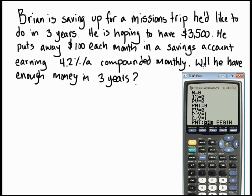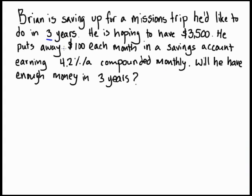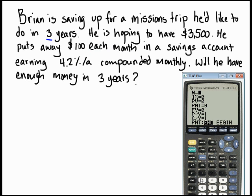Let's take a look at the information here. For questions that involve regular payments, N is not the number of years — N is going to be the number of payments. For compound interest questions without regular payments, N is the number of years. But in this case, with regular payments, N is the number of payments. It's three years and he's doing $100 each month, so that would make 36 payments.